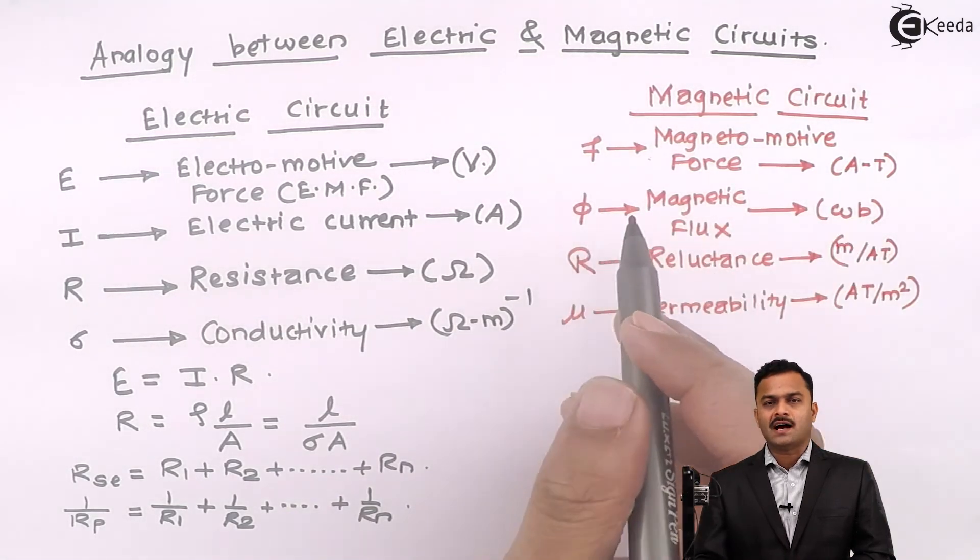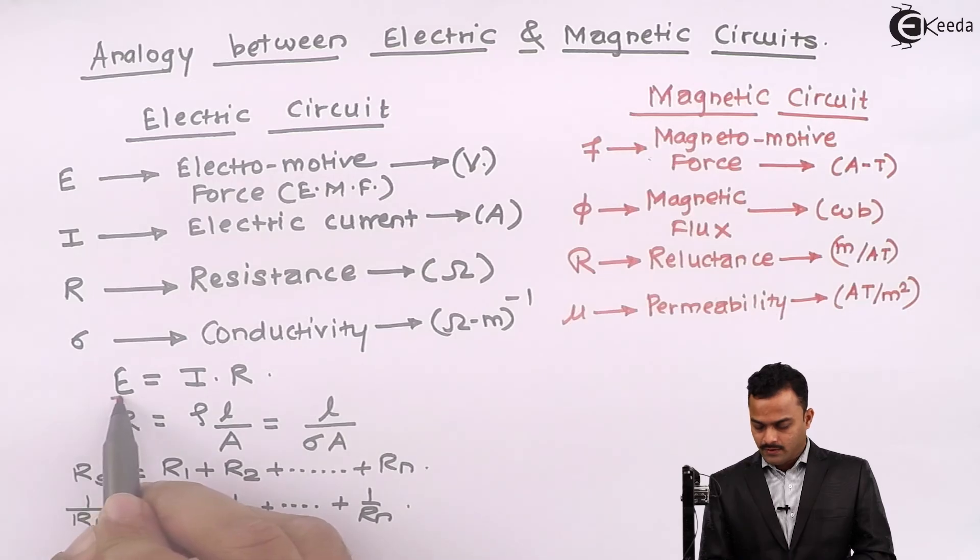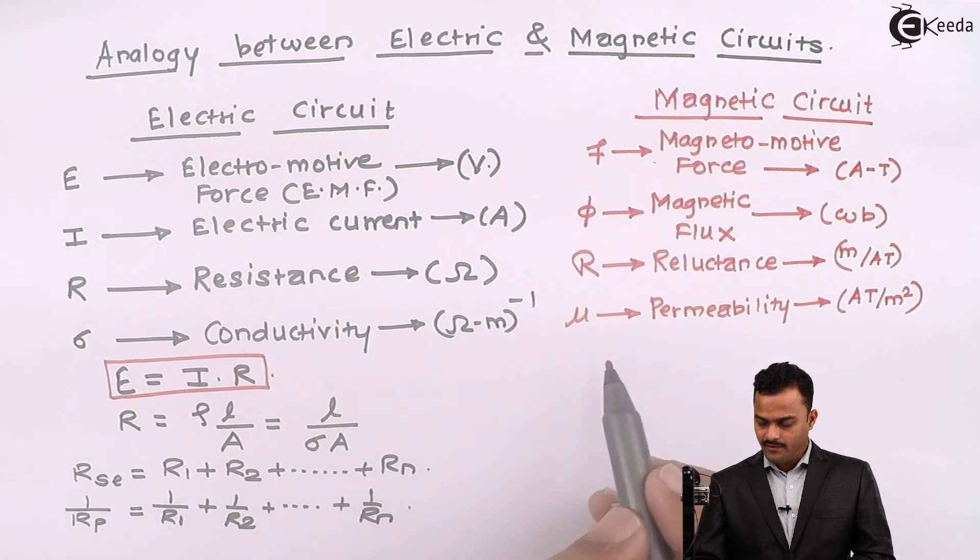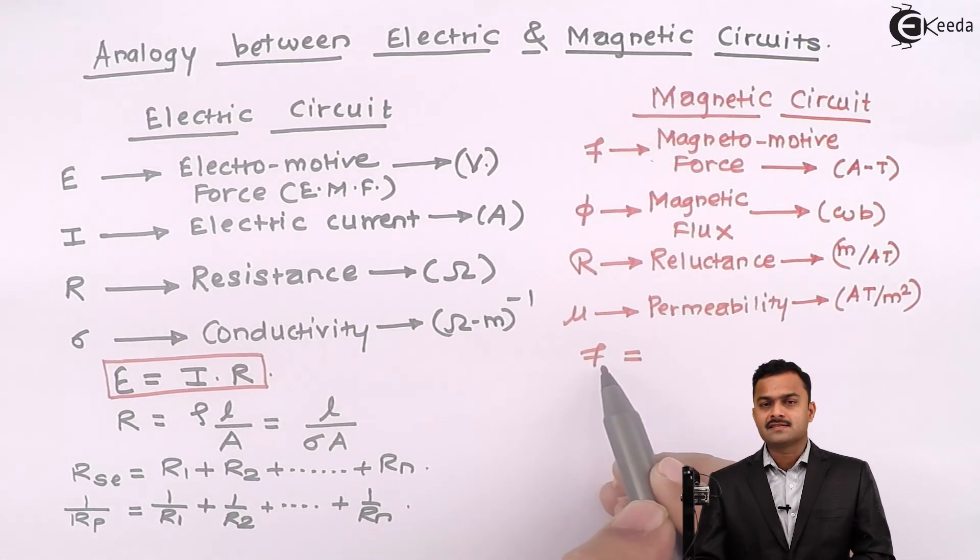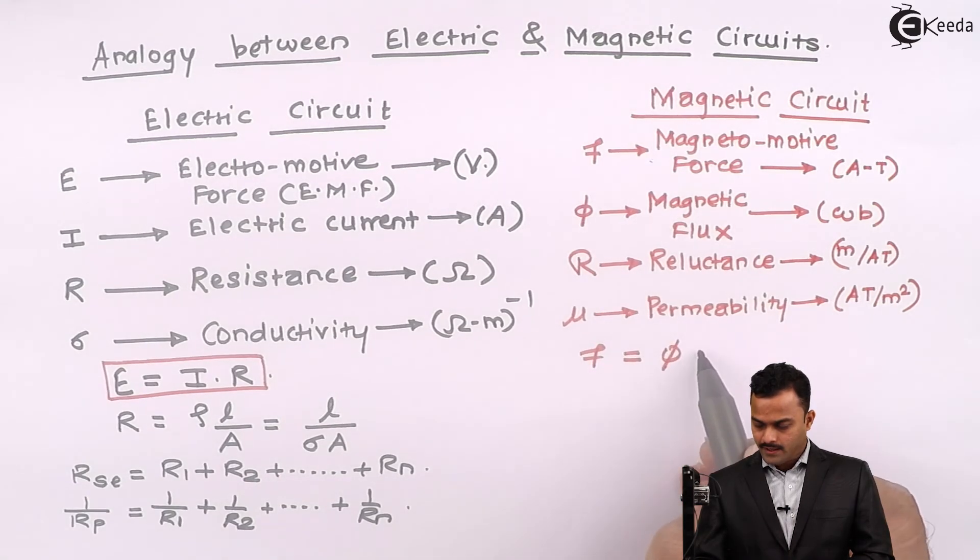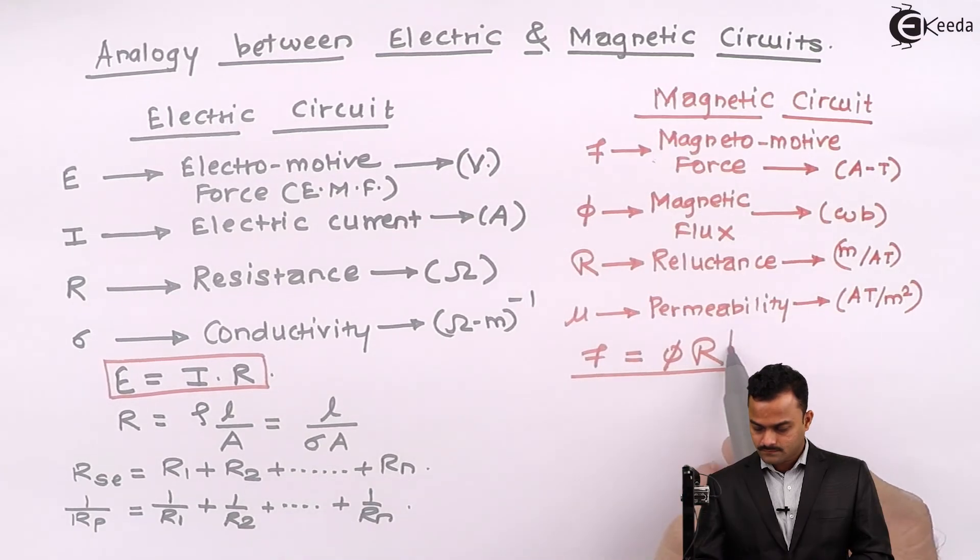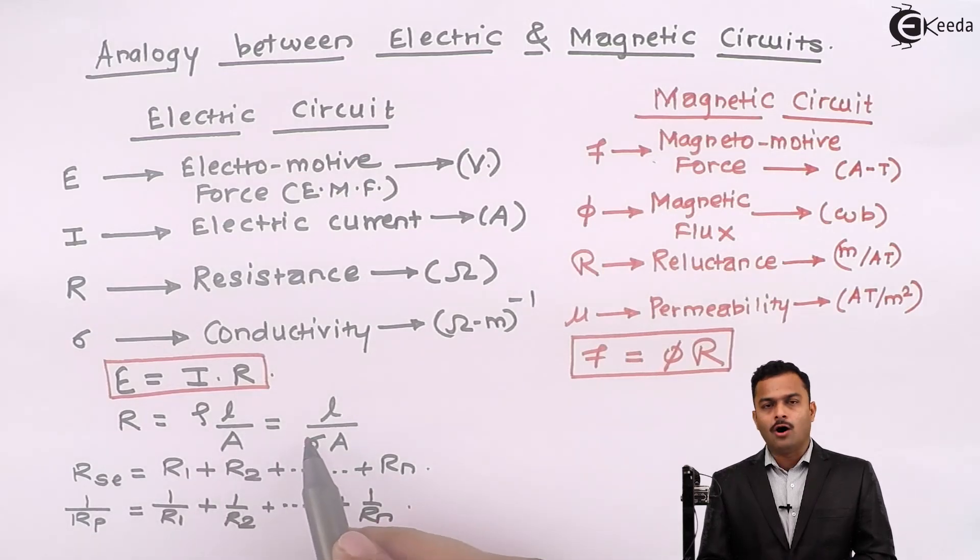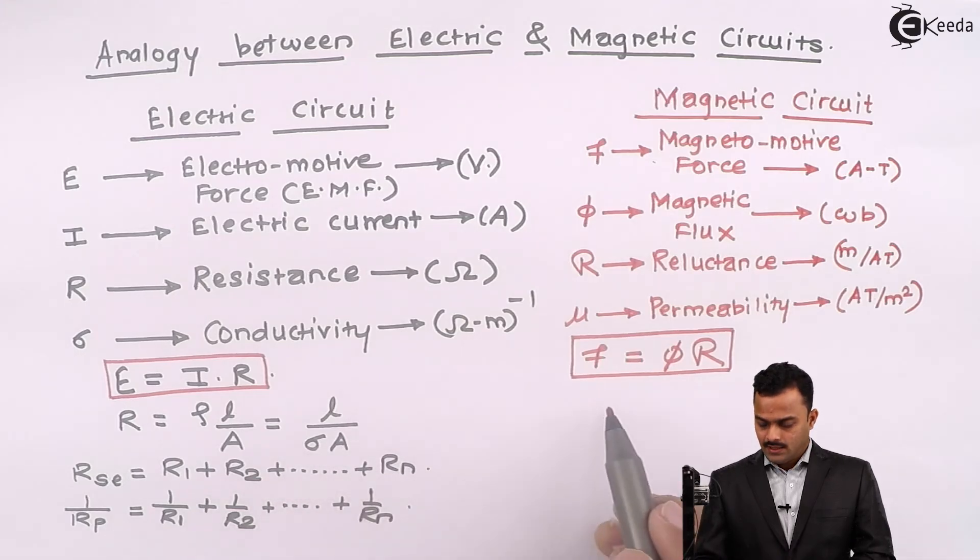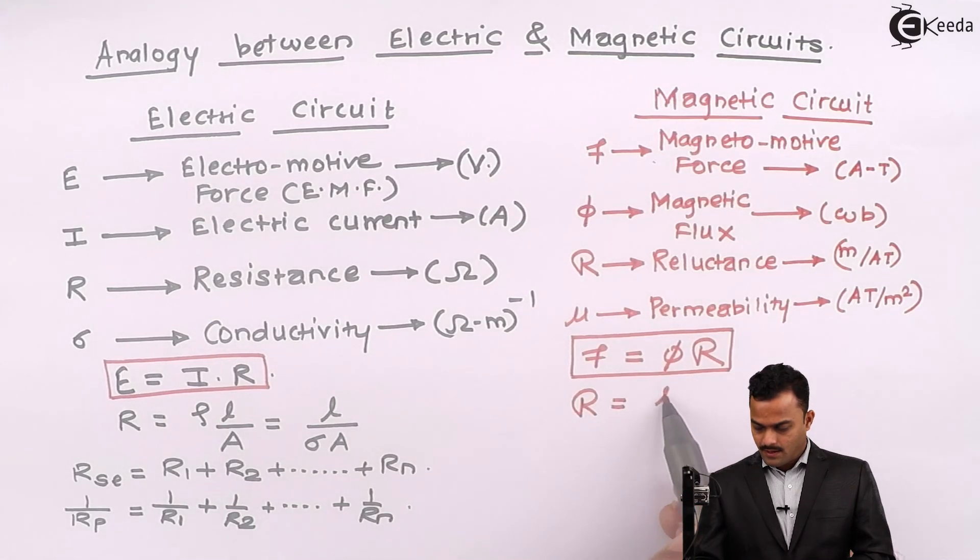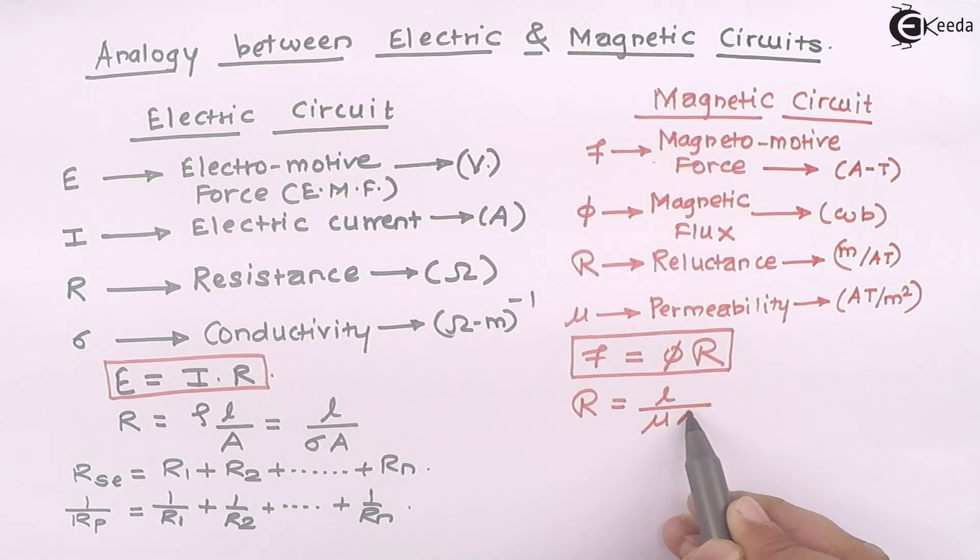Now how these terms are related to each other. Just like E equal to IR, we have F equal to phi into reluctance. F is a magnetomotive force. R equal to rho L by A or in terms of conductivity L divided by sigma A. In magnetic circuit reluctance is given as L divided by mu A.